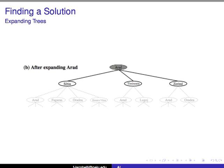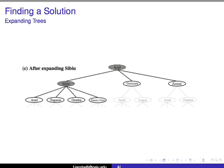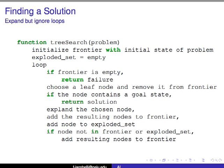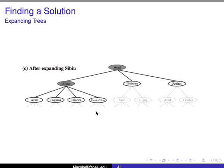Now the frontier is those three nodes: Sibiu, Timisoara, and Zerind. You expand the first node in the frontier because it's a queue. From Sibiu you get Arad, Fagaras, Oradea, and Rimnicu Vilcea. You've added those to the frontier. Now the frontier is all of these nodes plus these new ones. You keep expanding until you find the city you want to go to.